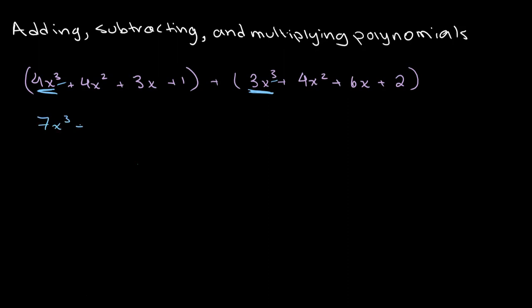Then we can add 4x squared and 4x squared, which gives us 8x squared. We can take 3x and 6x, which gives us 9x. And we can take plus 1 and plus 2, which gives us plus 3. So that's simple enough.